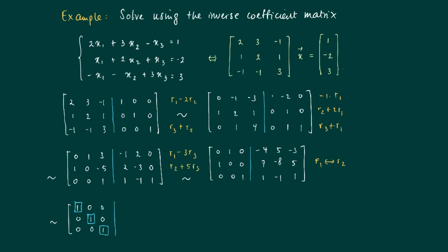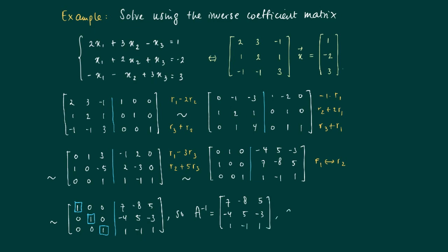With the identity matrix on the left of the blue line and 3 pivots confirmed, we read off the inverse from the right-hand side. The matrix on the right is: [7, −8, 5; −4, 5, −3; 1, −1, 1]. From this we conclude that A inverse equals [7, −8, 5; −4, 5, −3; 1, −1, 1].